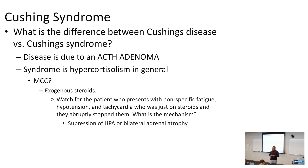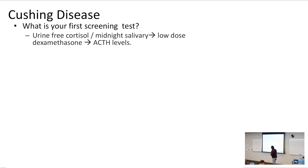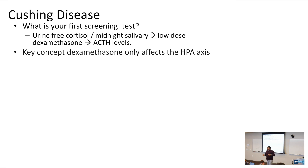Let's talk about Cushing's disease, which is related to adenoma. What is your first screening test for Cushing's disease or hypercortisolism? You want to get a urine-free cortisol level. After that, you're going to do the low-dose dexamethasone test and get ACTH levels. Dexamethasone only affects the hypothalamic pituitary axis — it is not going to stop any exogenous steroids.